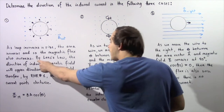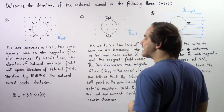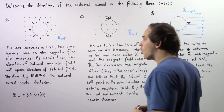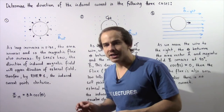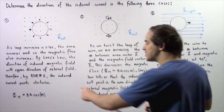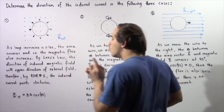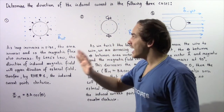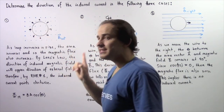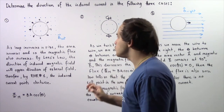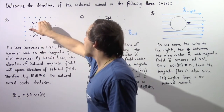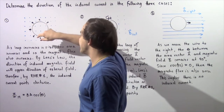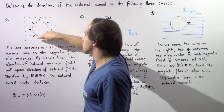By Lenz's Law, the direction of the induced magnetic field will oppose the direction of the external magnetic field, which implies it points into the board. Now we apply right-hand rule number one, which tells us that the induced electric current in the wire will point in the clockwise direction. We take our right hand, curl our fingers in the same direction as our induced magnetic field — into the board — wrap our hand around the wire, extend the thumb, and the thumb points in the clockwise direction around the circular loop.